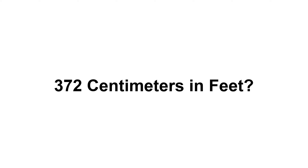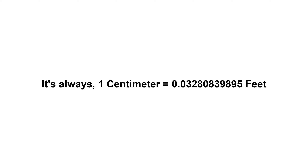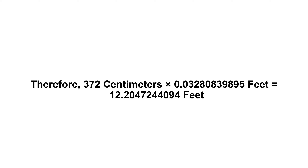372 centimeters in feet. First of all, we need to know the value of one centimeter in feet. It's always one centimeter equals 0.03280839895 feet. Now we have to multiply 0.03280839895 by 372, therefore 372 centimeters times 0.03280839895 feet.